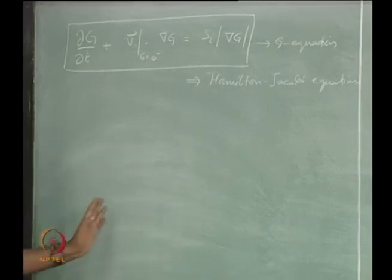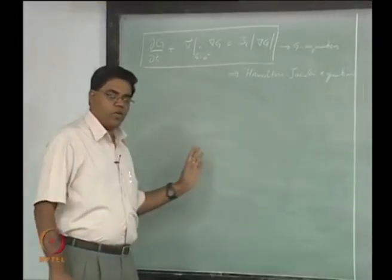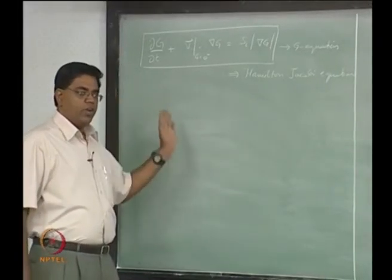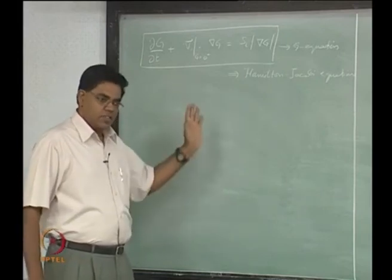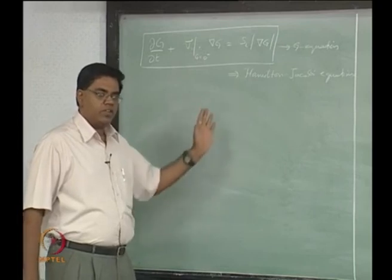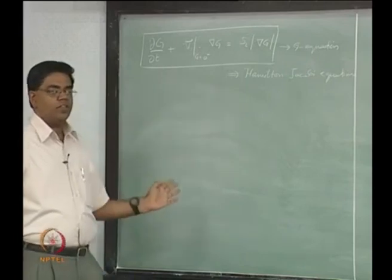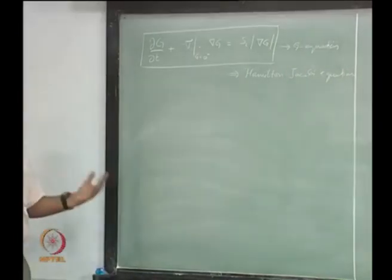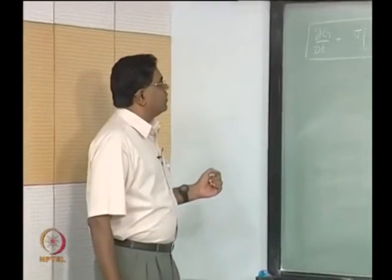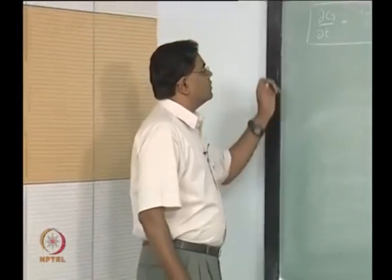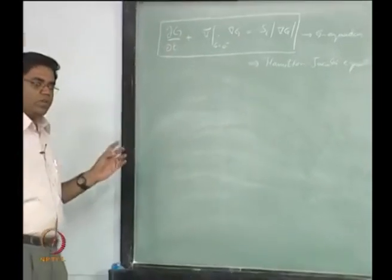G varies from a value less than 0 to a value greater than 0 through a very thin region where it drastically increases from less than 0 to greater than 0 through 0. Wherever you have this iso-surface of G equals 0 will form the flame sheet, as we were saying. But it is possible also to solve this equation directly without having to assume that it is a scalar field.